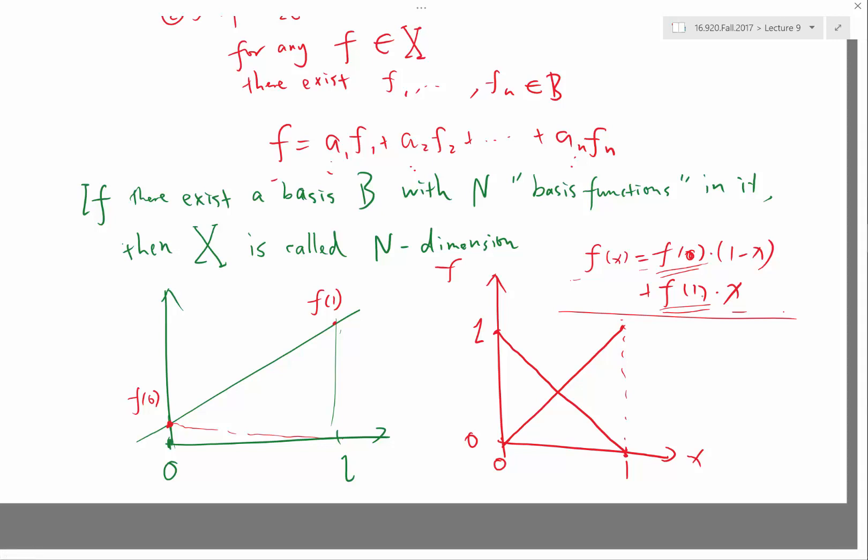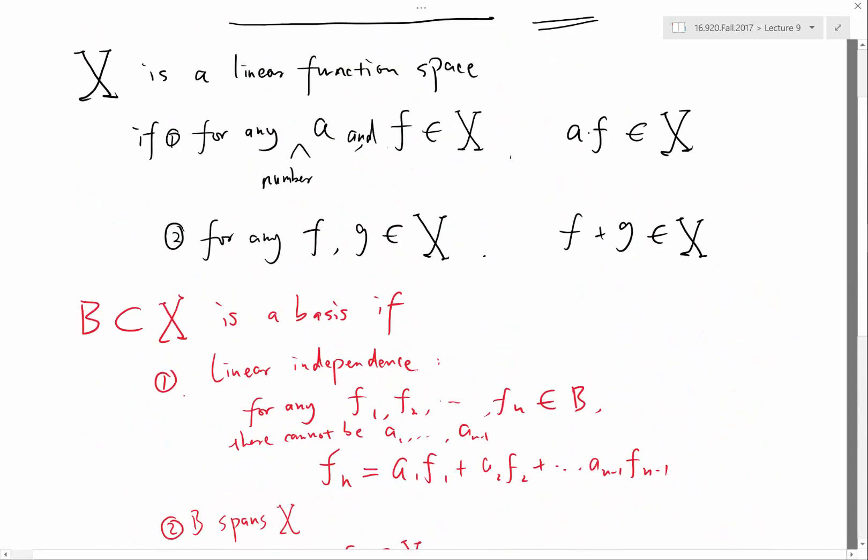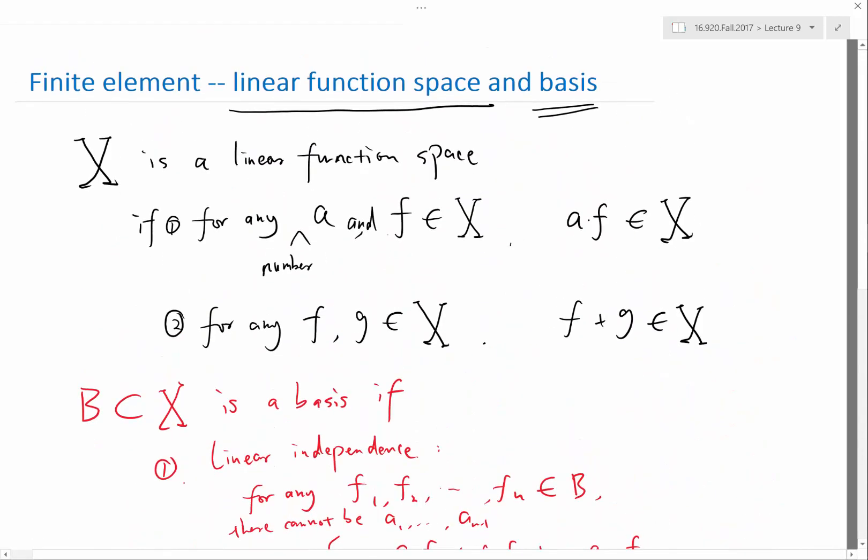So this is an example of a linear space. And again, the idea of finite element is to look for, for an arbitrary function, look for a function inside a finite dimensional linear function space, that is as close to that function as possible.